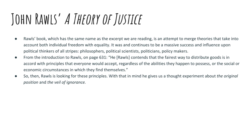Here is a quote from the introduction to Rawls in our textbook: Rawls contends that the fairest way to distribute goods is in accord with principles that everyone would accept, regardless of the abilities they happen to possess or the social and economic circumstances in which they find themselves. So Rawls is looking for principles of justice that everyone could accept despite their differences. That's the goal of this part of the paper. He gives us a thought experiment that tries to show that when you strip away all the things that make us unique, and we're left with just what makes us rational human beings, there are two principles of justice that everyone would agree to.